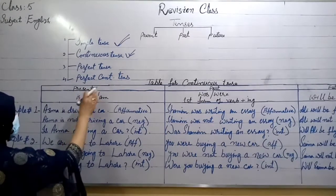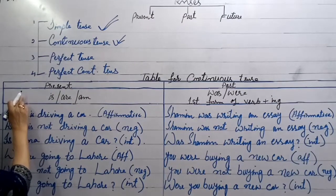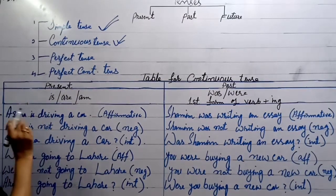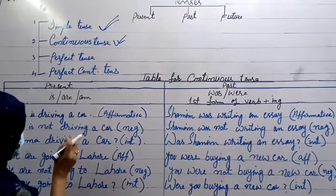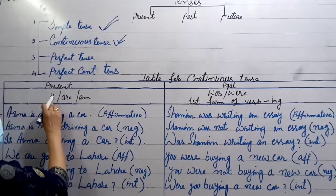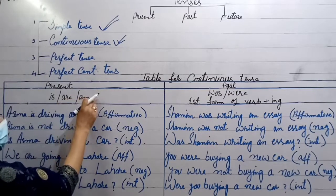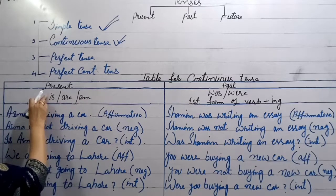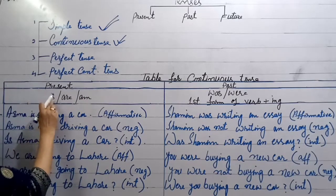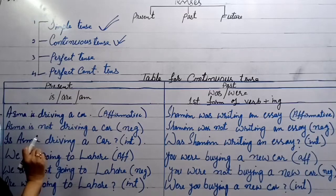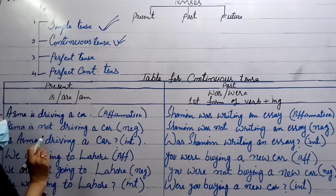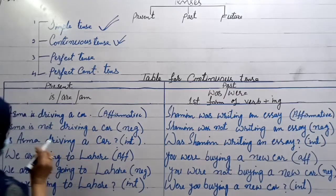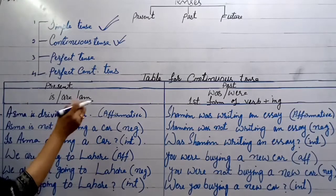Look at the table for continuous tense. For present tense, just after the subject, you will write the auxiliary verb — that is, the helping verb — is, am, or are. For a singular subject, you will use 'is'; for plural, 'are'; and 'am' is used with 'I'. Then the object follows.